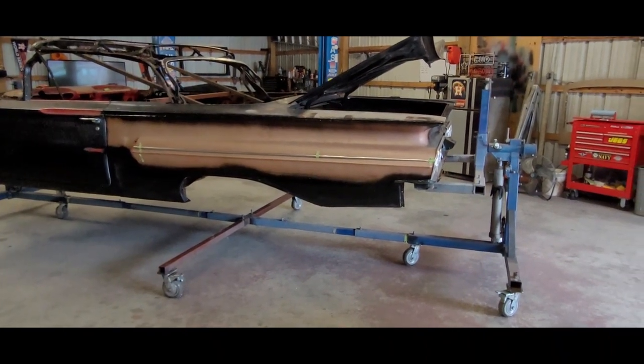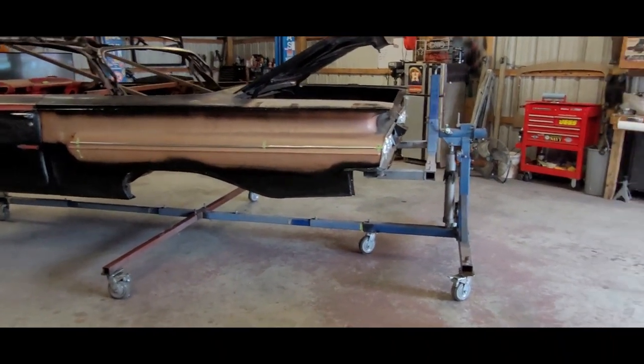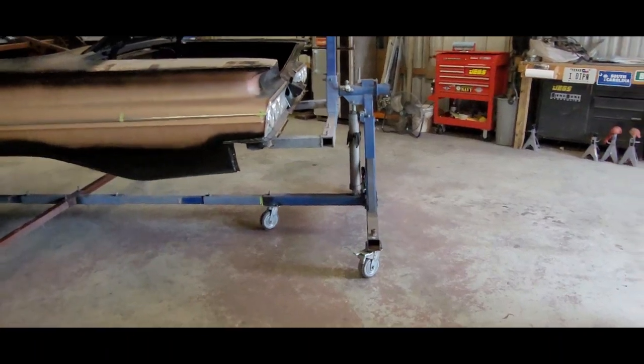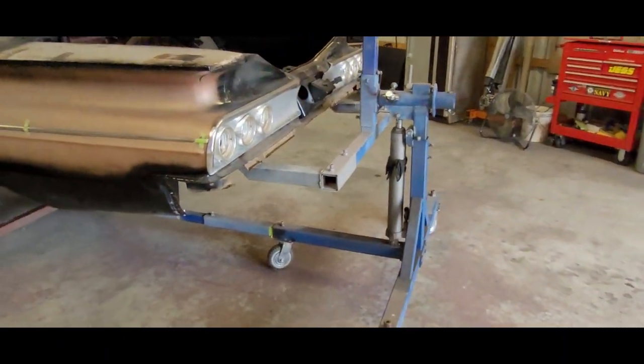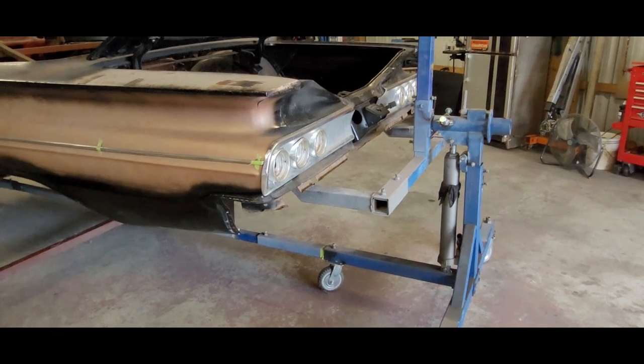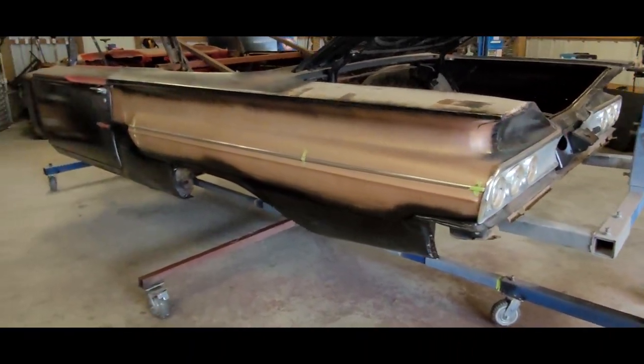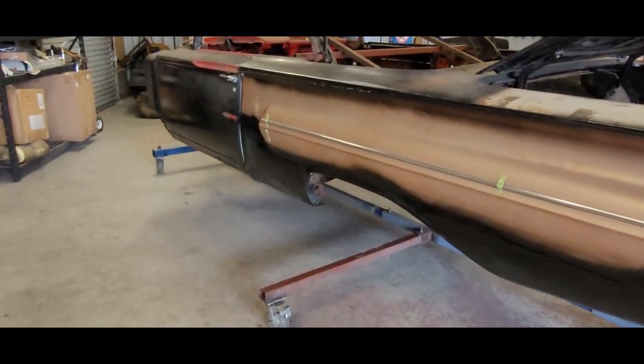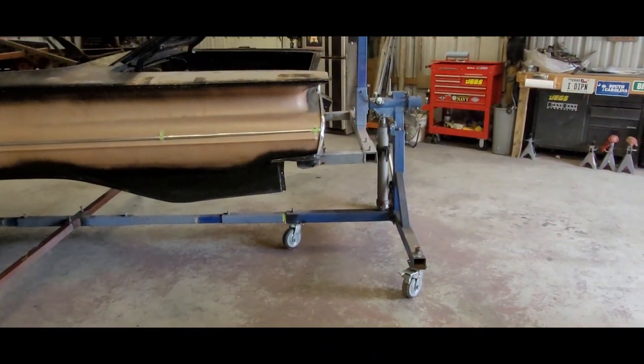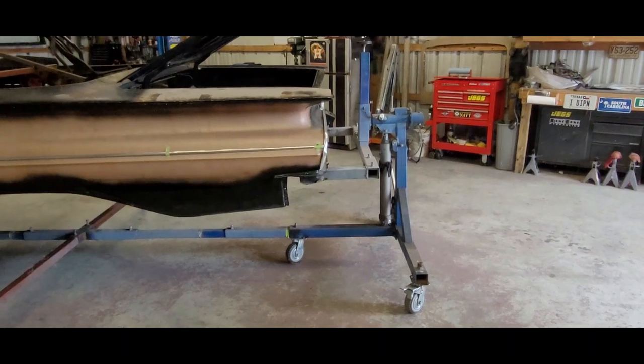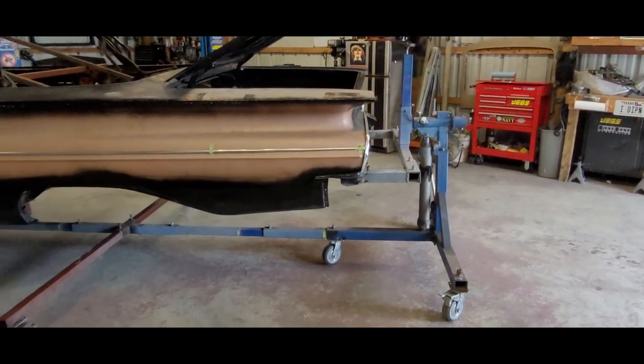This rotisserie I bought in 2016, I believe. Got it off eBay. It's called CR3000. So if you go to eBay and you just type in simply CR3000, this rotisserie is going to pop up. Now when I bought this thing in 2016, it was $800 I believe. Now it's about $500 more.